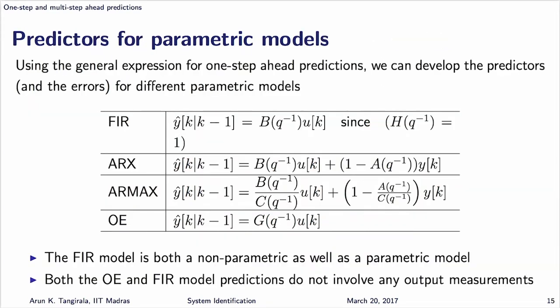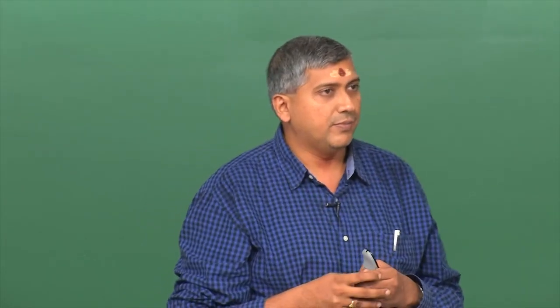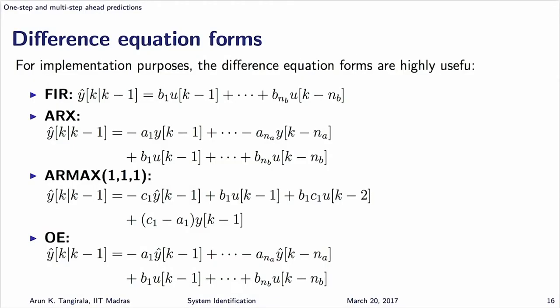If you take this formula and apply it to different model structures, you get these predictors. The simplest is FIR, then ARCS, then RMAX and OE and so on. What you find interesting about FIR and OE is that the predictions are purely derived from the input, whereas with ARCS, RMAX, and BJ, the predictions involve past measurements as well. If you do not see that clearly, look at the difference equation form.